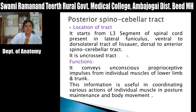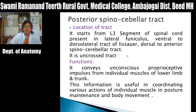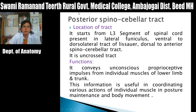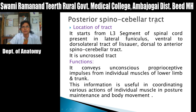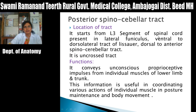Now we will see about the spinocerebellar tracts. As these tracts carry proprioceptive sensations — unconscious proprioceptive sensations — to the cerebellum, they are bineuronal pathways with only two neurons in their course. First is the posterior spinocerebellar tract. Location: it starts from the L3 segment of the spinal cord, so it is absent below L3 (lower lumbar and sacral segments). It is present in the lateral funiculus, ventral to the dorsolateral tract of Lissauer and dorsal to the anterior spinocerebellar tract.